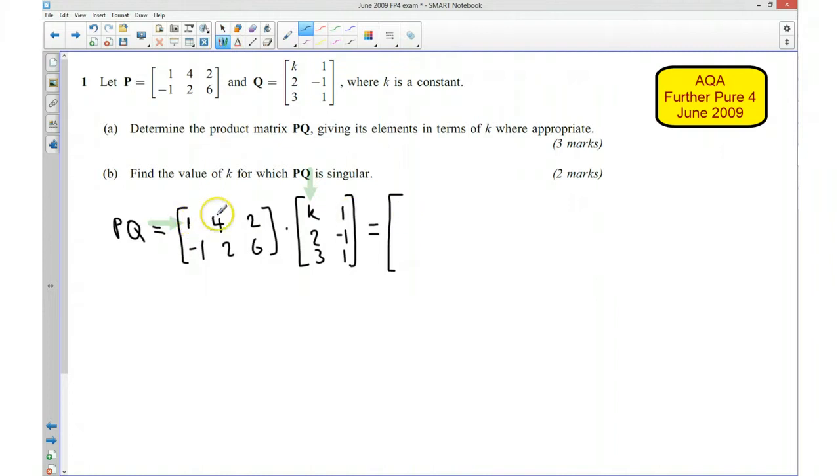So that means I'm going to do 1 times k which is k, and then I'm going to move this along and I'm going to do 4 times 2 which is 8, so I need to add that on, so it's going to be plus 8. And then I'm going to do 2 times 3 which is going to give me 6. So that's going to be the first row, first column of my product.